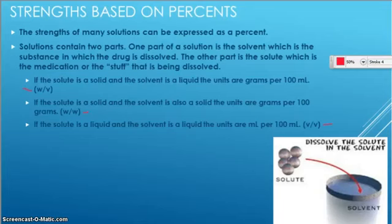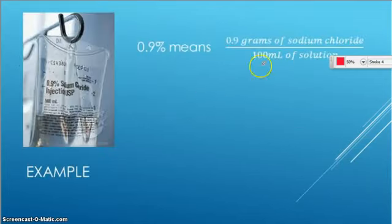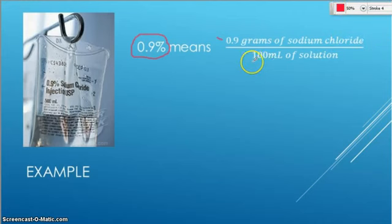And that top number of that percent tells us how much. So for example, if we see something that is 0.9 percent, that means we have 0.9 grams in this case of sodium chloride in 100 milliliters of solution.